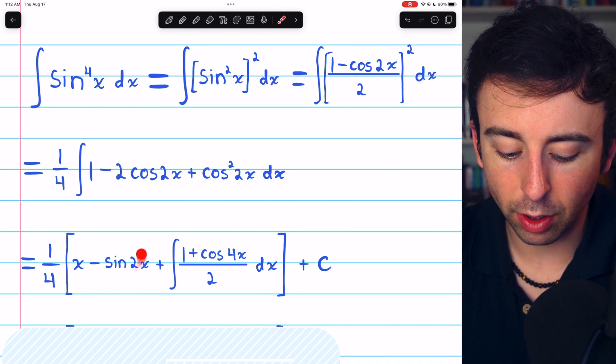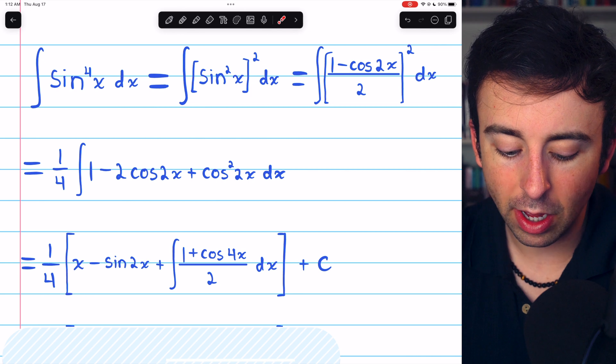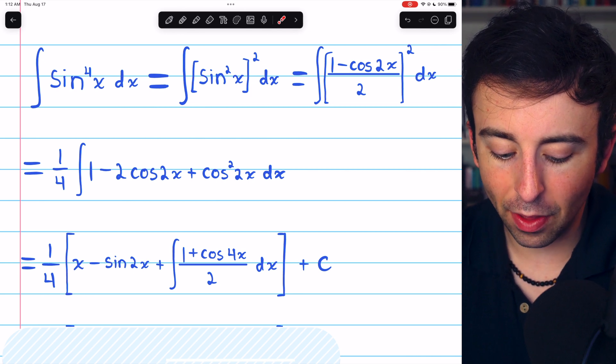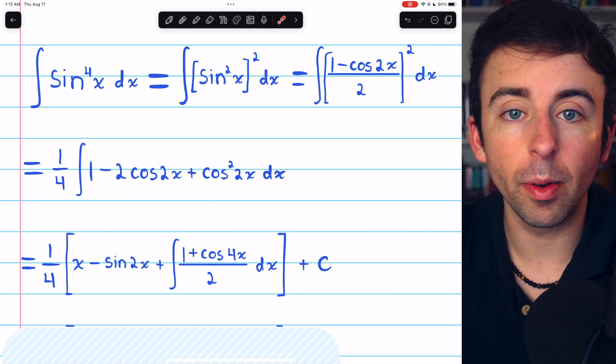You can see if we took the derivative of this, we'd get negative cosine of 2x, and then the factor of 2 would come from the chain rule.